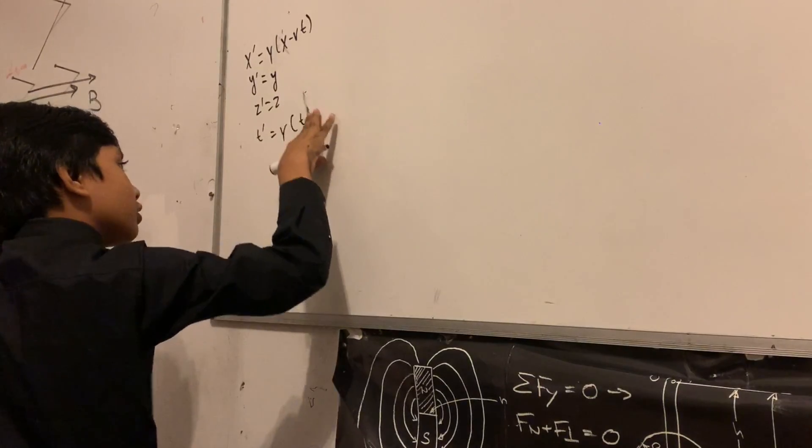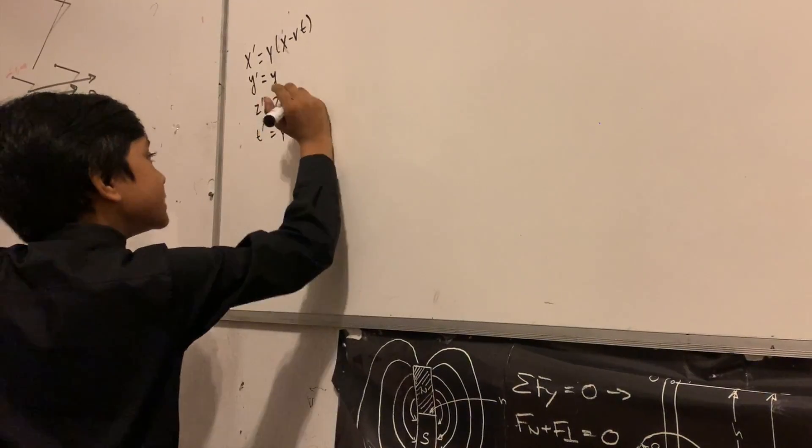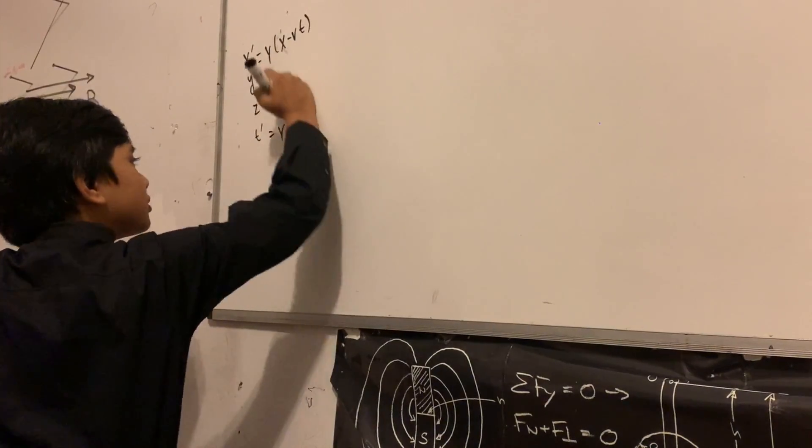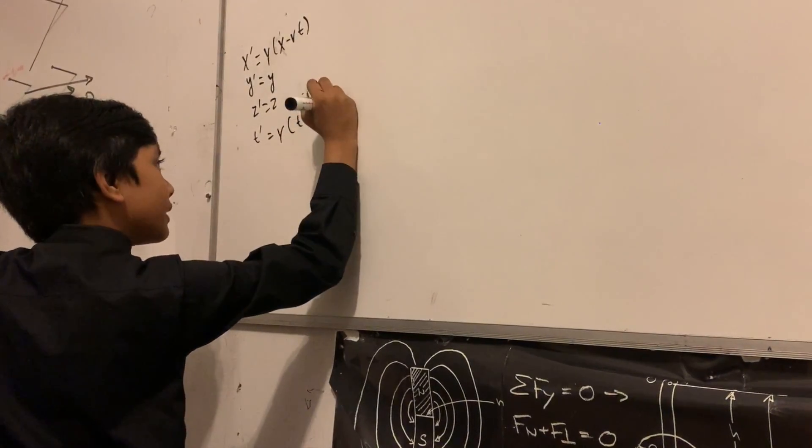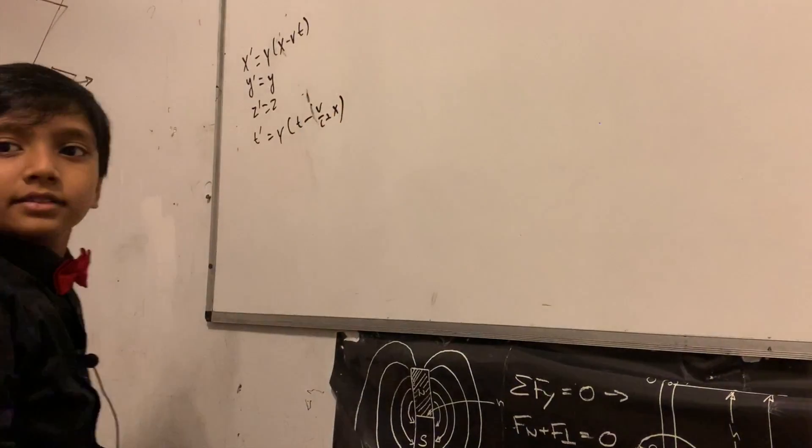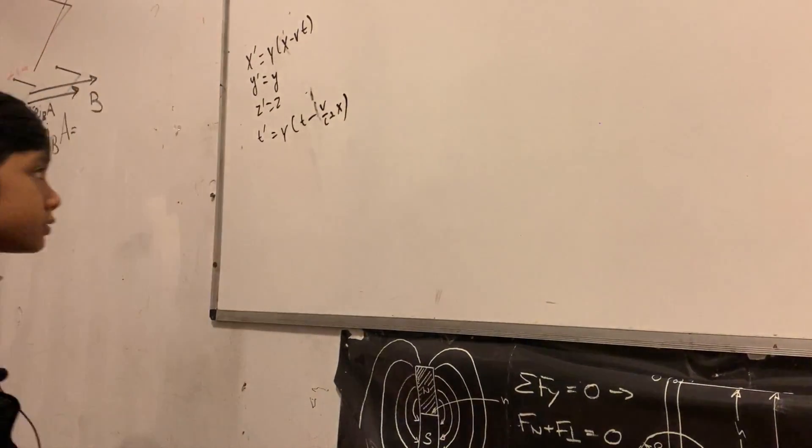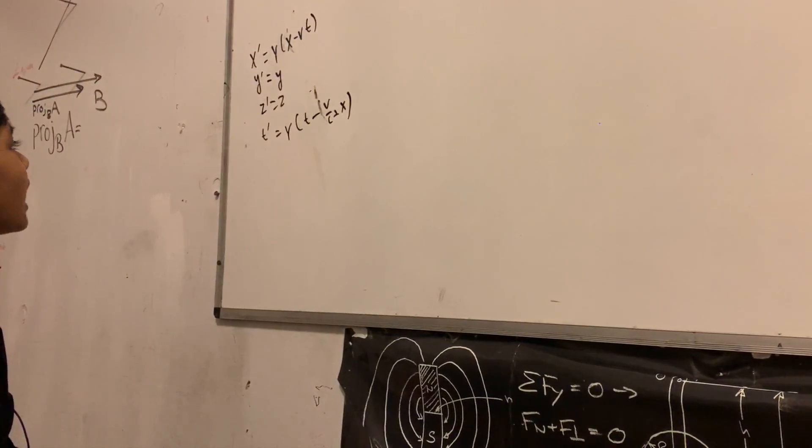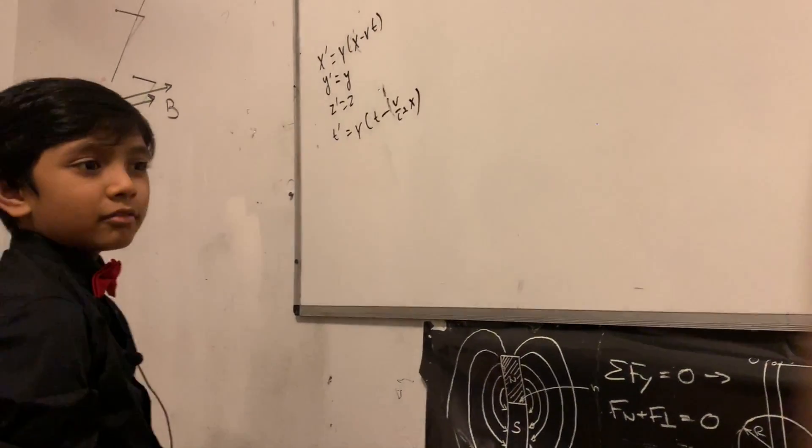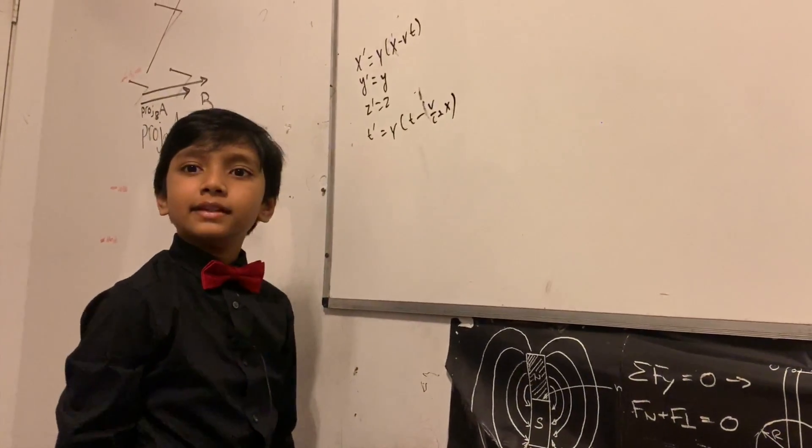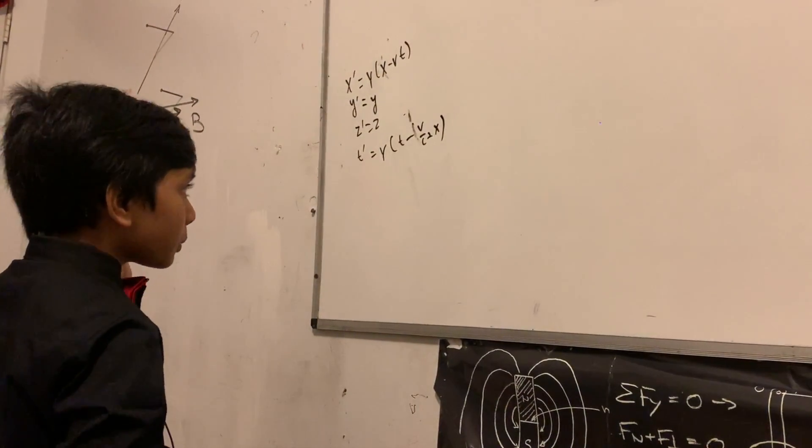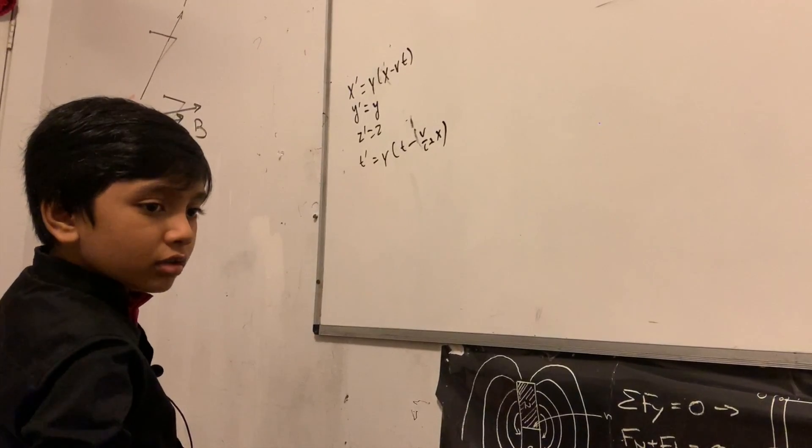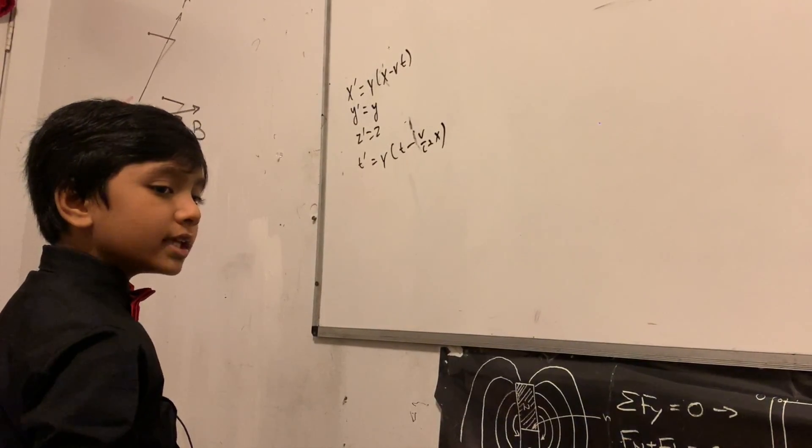And then that's going to be, sorry making a bit of mistakes, minus vx over c squared. Everybody makes mistakes. So now that's how you have to describe it when you're in motion at relativistic speed. That's how you have to describe the motion of a normal person.